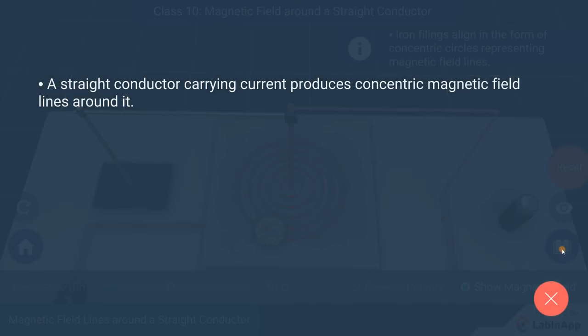So, we found that a straight conductor carrying current produces concentric magnetic field lines around it.